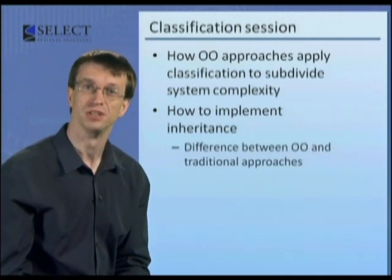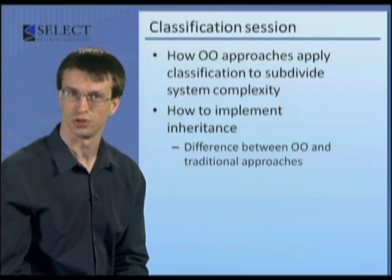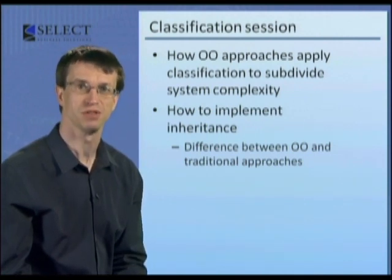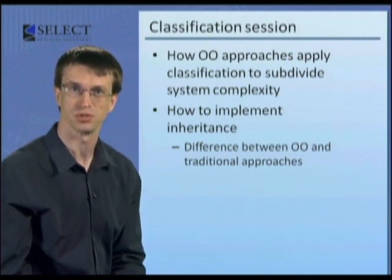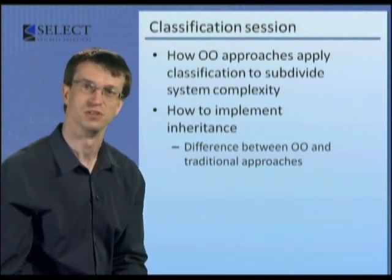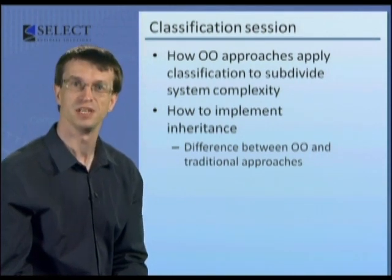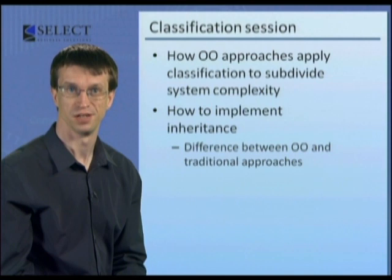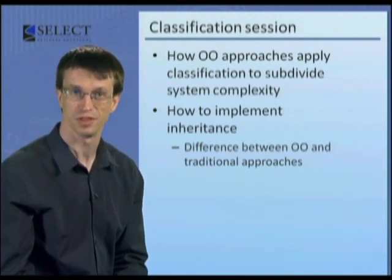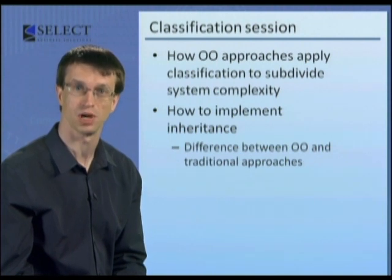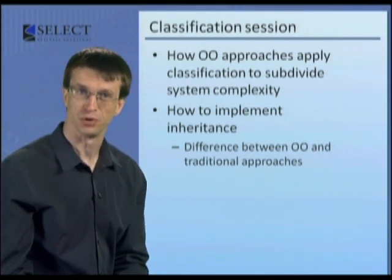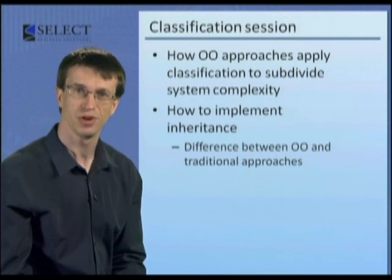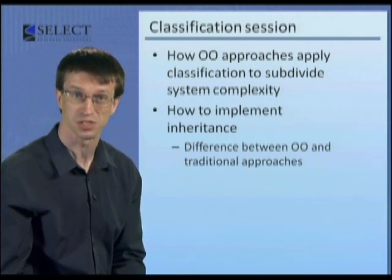The session on classification describes the main areas in which object-oriented approaches apply classification schemes to both objects and classes, in order to subdivide the complexity of the system into taxonomies of types. Mechanisms for inheritance and relationships between interfaces and implementations is the unique capability that object-oriented technology provides. The task of the designer then is to specify how those mechanisms within the implementation technology are to be used to satisfy the requirements. At various points throughout the sessions, your attention will be drawn to the differences between object-oriented approaches and previous technology which provided less rich capabilities in this particular area.